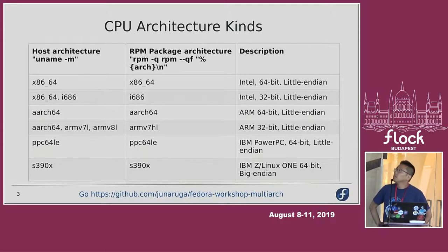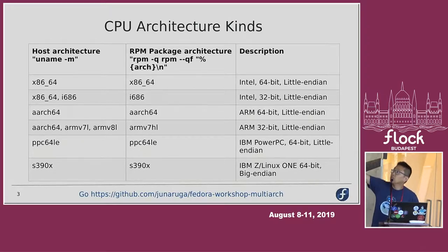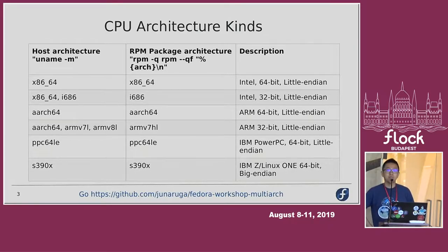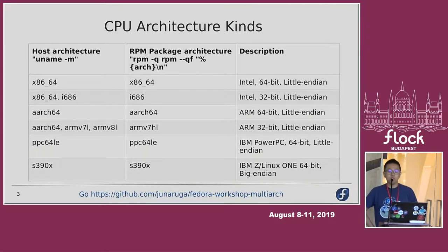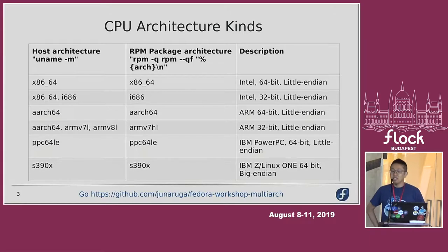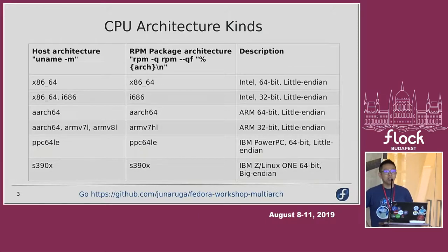There are two arcs: host arc by uname command, and package arc that is used as part of the RPM package name. Also, some patterns of CPU we need to care about — for example, the CPU is Intel, ARM, or IBM. And the CPU is 64-bit or 32-bit. Little-endian or big-endian.